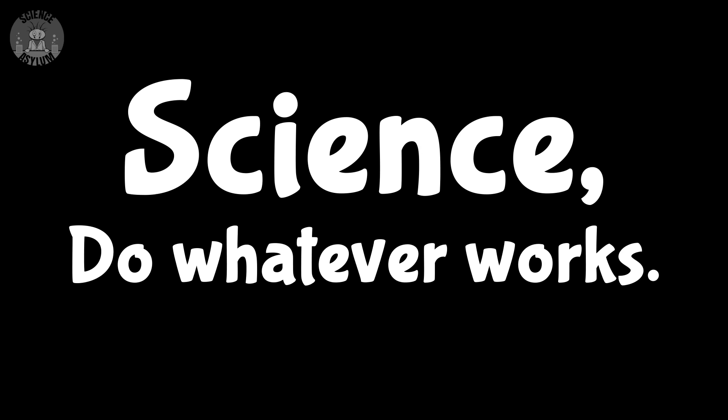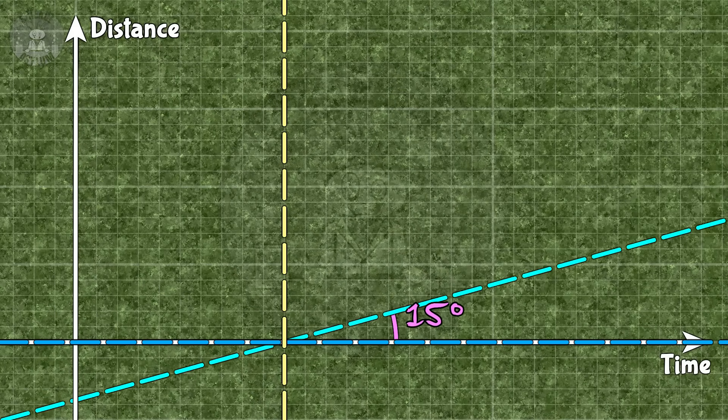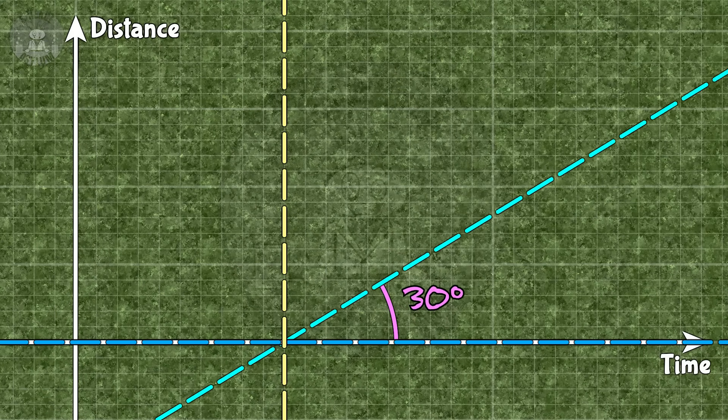Can you just make up a measurement like that? Sure. Why not? All measurements are made up. Science. Do whatever works. As long as your definitions are logically consistent, you're fine. This new way of measuring speed is logically consistent. It just isn't what you're used to. And believe it or not, it happens to be the better choice.